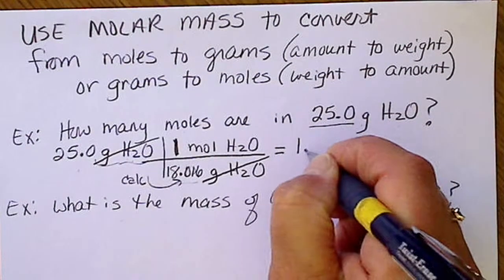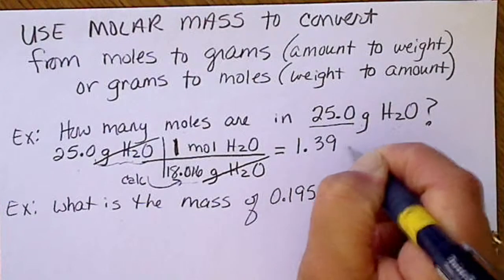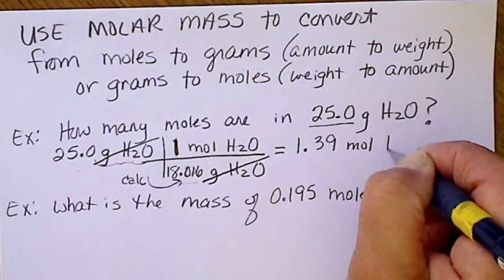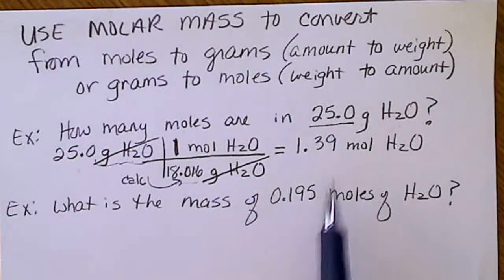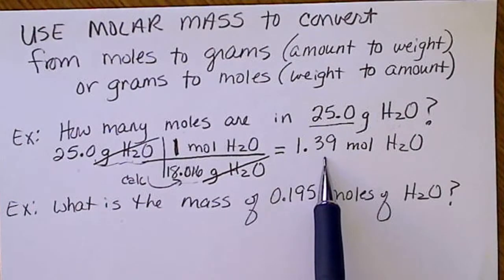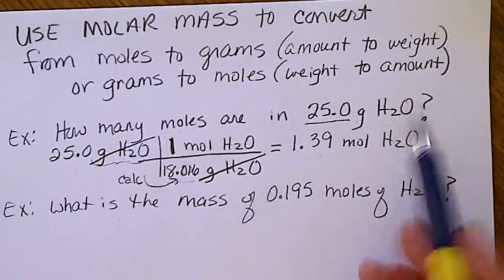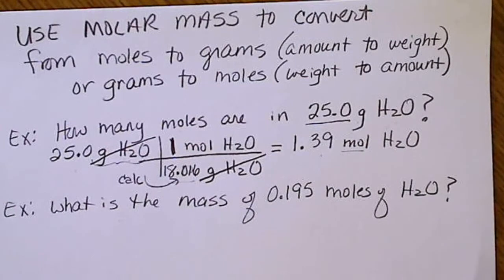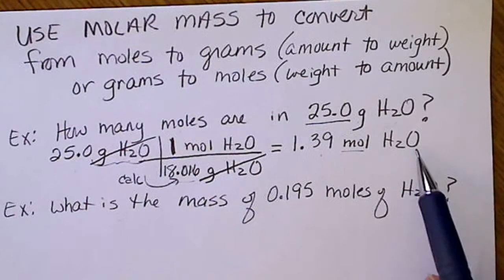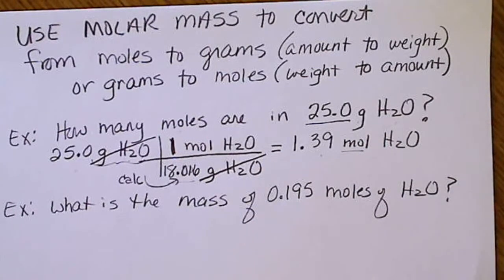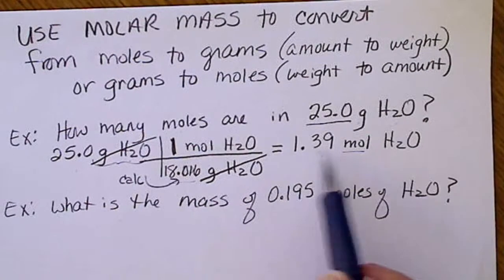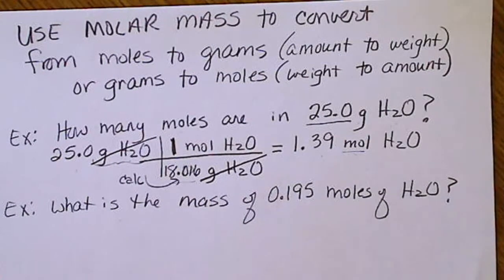And so we'll take 1.39 as our answer. This would be 1.39 moles of water. And trying to visualize this amount is not going to make any sense whatsoever. Remember, the mole is just a unit. We're going to combine this step later on with the balanced equation step, so we need to be in moles in order to follow a recipe.